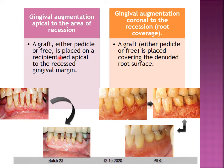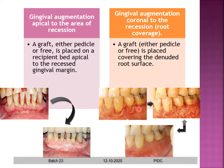For augmentation apical to the recession, a graft — either pedicle or free — is placed on the recipient bed apical to the recession area. You can see the attached gingiva is very little, so a free gingival graft has been taken from the palate and placed apical to this area to increase the width of attached gingiva. For gingival augmentation coronal to the recession, the graft covers the denuded root surface. Here an AlloDerm has been placed over the recession, bringing it to class 1. This root coverage procedure will be seen in the next two classes.